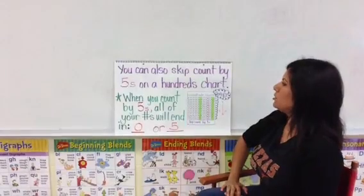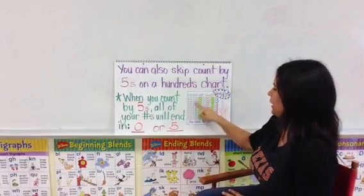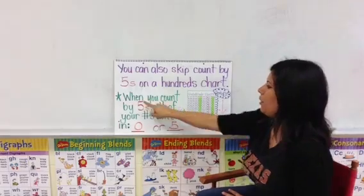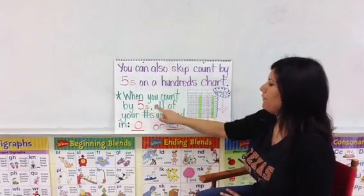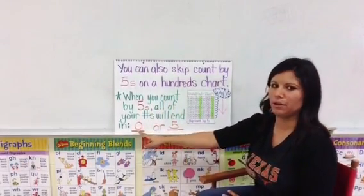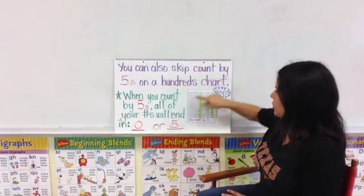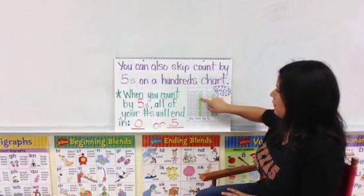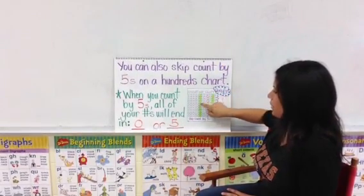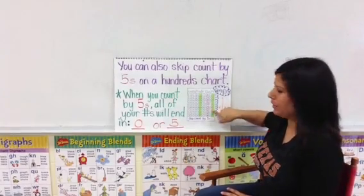You can also skip count by fives on a hundreds chart. Here you have a hundreds chart counting by fives. When you count by fives, all your numbers will end in either a zero or a five. So for example: five, ten, fifteen, twenty, twenty-five, thirty, and so on. So the numbers are highlighted in green.